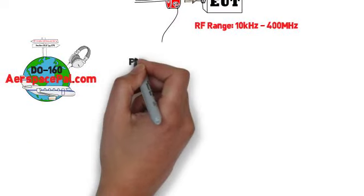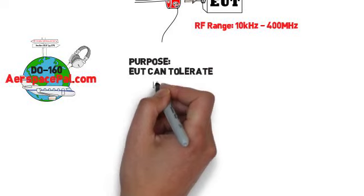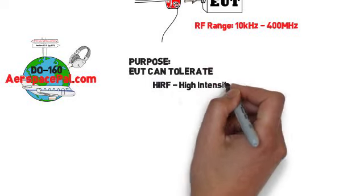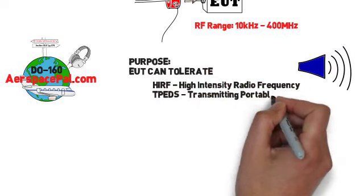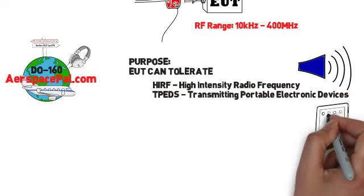The purpose of section 20 is to ensure your system can handle environments with HERF (high intensity radio frequency), T-PEDS which is transmitting portable electronic devices, and other installed system emissions.